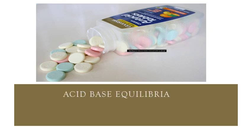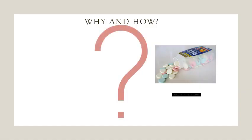We will continue our discussion on equilibrium, but in this chapter we are going to learn acid-base equilibrium. We are familiar with acids and bases in daily life. For example, people use antacid to neutralize the extra acid or to get relief from acidity in the stomach. Anything that tastes sour we call it an acid, and anything that is bitter and slippery in touch we call it a base. When they combine, they neutralize each other.